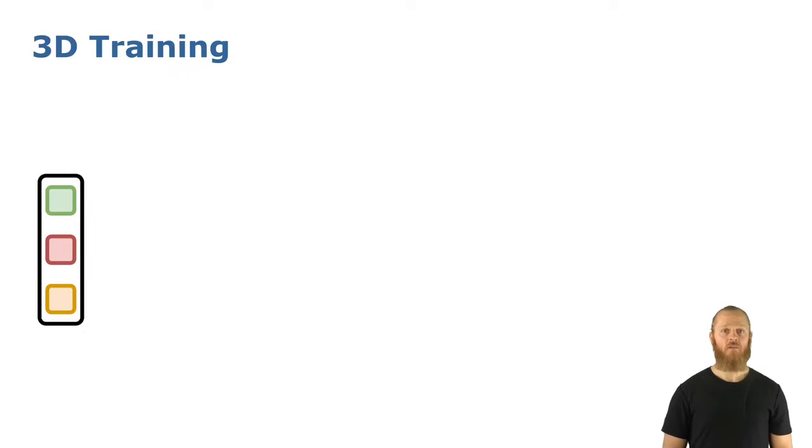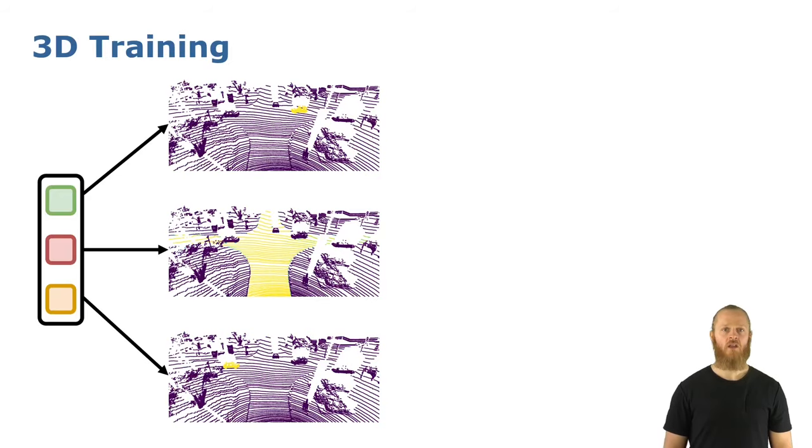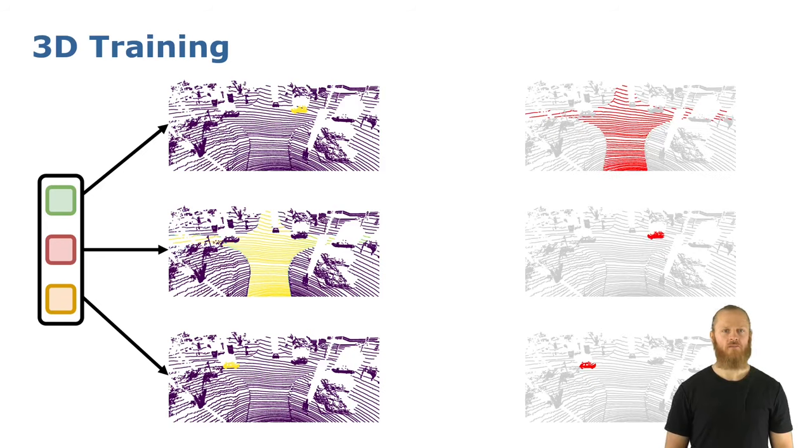To train our approach for 3D panoptic segmentation, we first obtain for each query a binary mask and a semantic class. To optimize the predictions, we have to match them with a ground truth mask. In order to do this, we use the Hungarian algorithm to match the most similar ground truth and prediction, and then we compute for each one of these pairs two losses, one to maximize the mask similarity, and another for the semantic class.